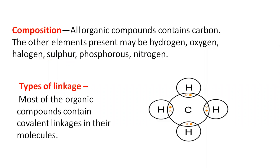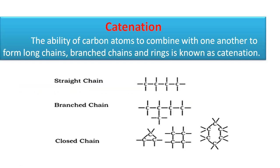All organic compounds contain carbon; the other elements present may be hydrogen, oxygen, halogens, sulfur, phosphorus, and nitrogen. The main component is carbon, and all organic compounds contain covalent linkage in their structure. For example, in methane, the bond between carbon and hydrogen is formed by the sharing of a pair of electrons, and therefore such covalent linkage is present in organic compounds.